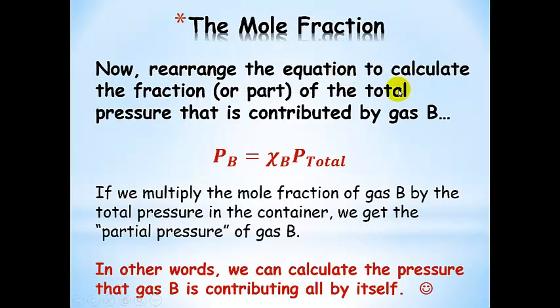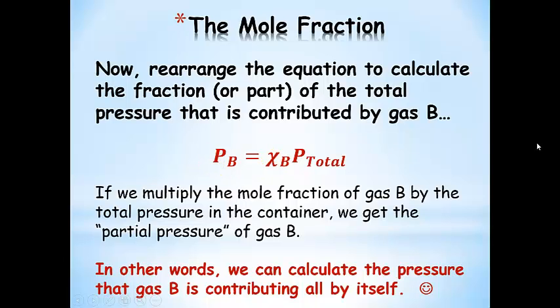Rearranging the equation to calculate the fraction of the total pressure contributed by gas B: the pressure of gas B equals the total pressure multiplied by the mole fraction. We could do that with any one of the four gases in the container — take the total pressure, multiply it by the mole fraction, which is some number less than one, and get the pressure that gas B is contributing all by itself.